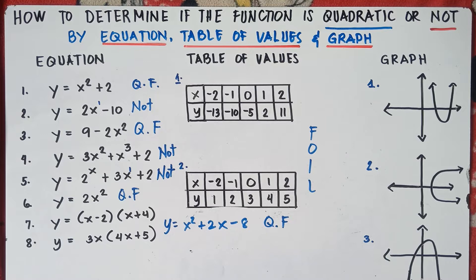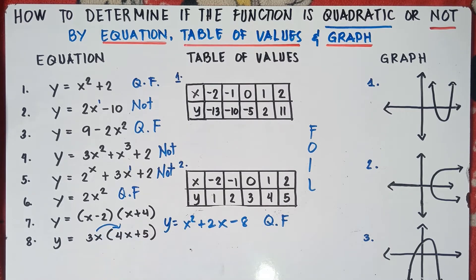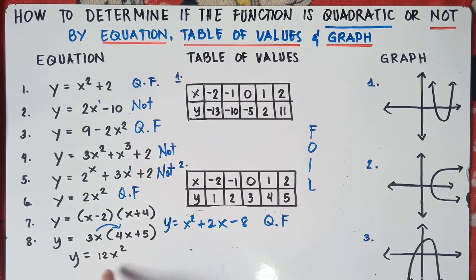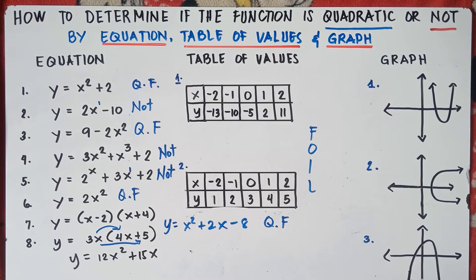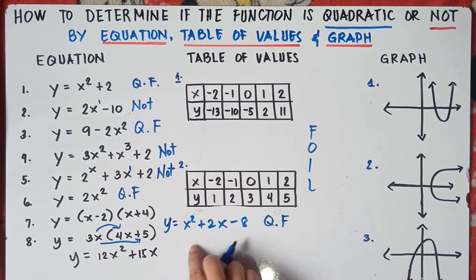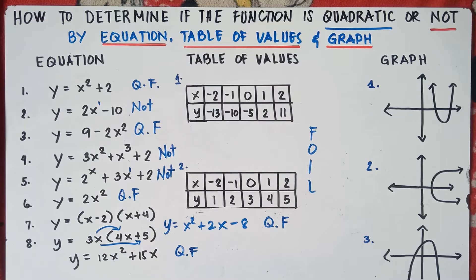For number 8, since there is a parenthesis, we need to simplify using the distributive property. 3x times 4x is 12x². Then 3x times positive 5 is positive 15x. So y = 12x² + 15x. Is it a quadratic function? Yes, that's a quadratic function because the highest degree is 2. You don't have the value of c, and b is 15, but still this is a quadratic function.